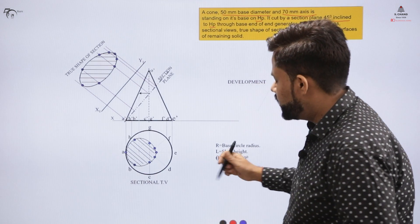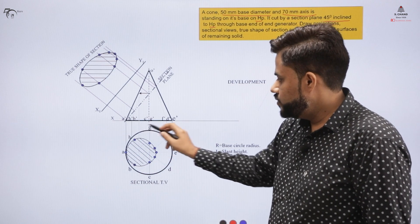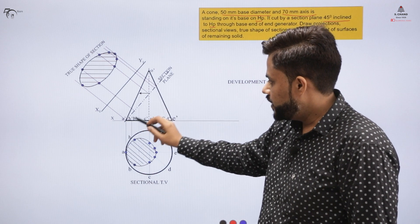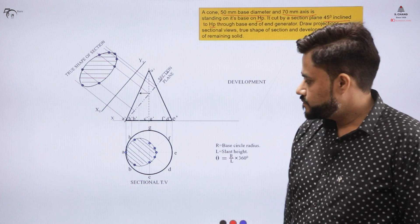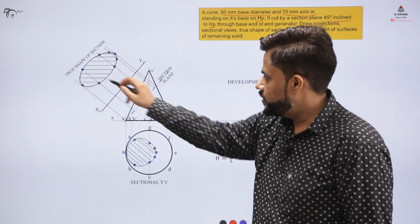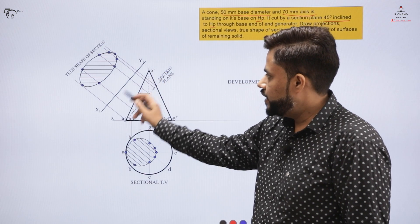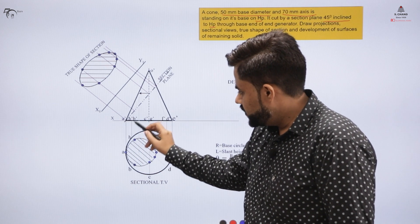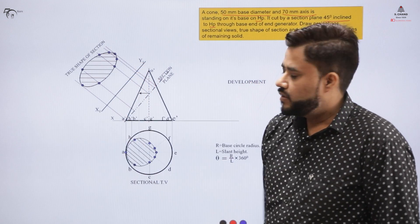In the first part, we made the front view, which is a triangle, and the top view, which is a circle. We cut the section, measured all the points, projected them downwards onto the top view, joined all the points, and made the sectional aspect. Then we drew the true shape by projecting all points upwards perpendicular, taking the x1-y1 plane adjacent to the front view, and measuring and joining all distances.